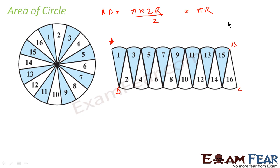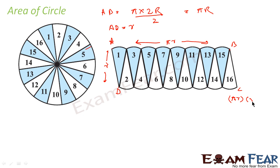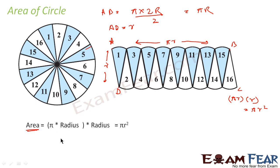And if you see the value of a,d, this is nothing but r. This length is r and this length is πr. So if you know the formula for a rectangle, the area is nothing but length into breadth. Here the area will be πr into r, which gives us πr². Thus the area of a circle is nothing but π into r into r, that is πr².